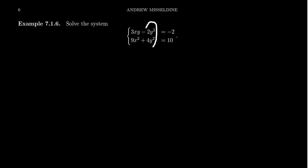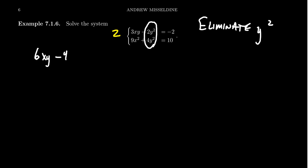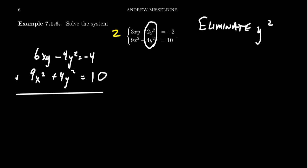I noticed that both equations have a y squared, so that's going to be my target. I'm going to eliminate y squared — like Arnold Schwarzenegger, we're going to terminate this thing. I can multiply the first equation by 2, and the signs are already opposite, giving us 6xy minus 4y² equals negative 4. Adding that to 9x² plus 4y² equals 10, the y² terms cancel, and we end up with 9x² plus 6xy equals 6.